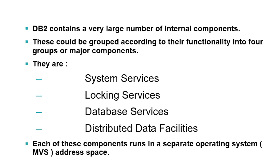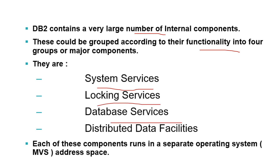DB2 contains a large number of internal components, which can be grouped by functionality into four major groups. The first is System Services, the second is Locking Services, the third is Database Services, and the last is Distributed Data Facility, or DDF.